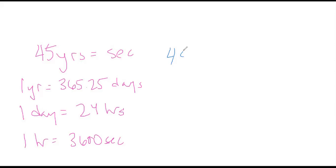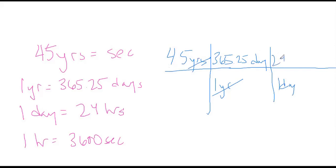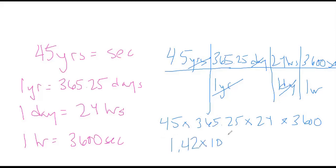We start with 45 years. Then we just cancel out units. One year, 365.25 days, years cancel. One day, 24 hours, days cancel. One hour, 3600 seconds. So we take 45 times 365.25 times 24 times 3600. Let's see if I can get this one right this time. 45...